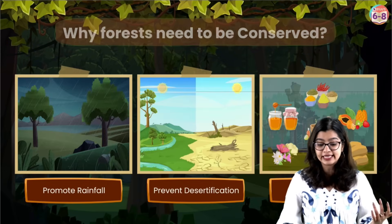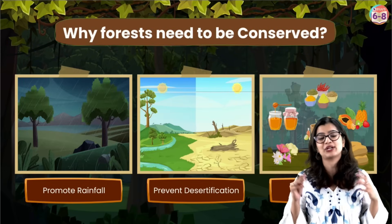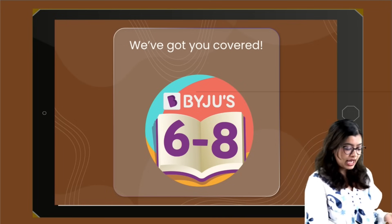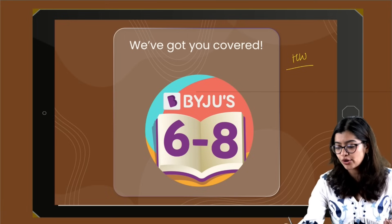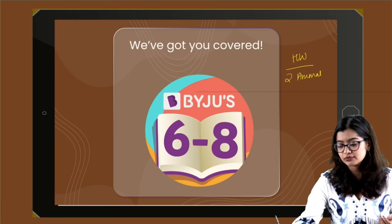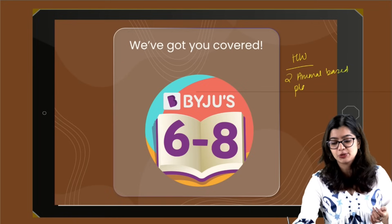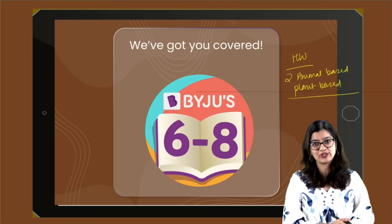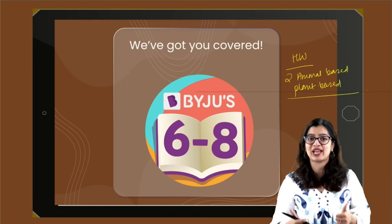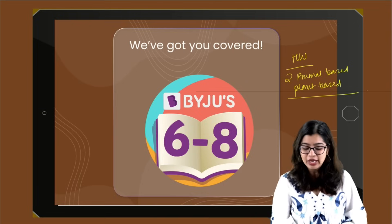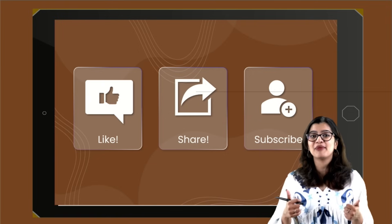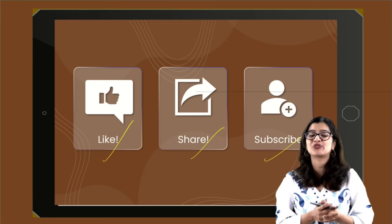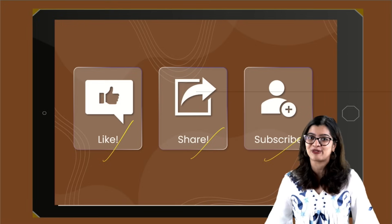Forests need to be conserved for all the reasons we have discussed. I hope this chapter has become easy. Your homework question: name two animal-based and two plant-based products that we get from forests — let me know in the comments. If you found this video helpful, don't forget to like the video and hit the subscribe button, because Baijiu628 has always got you covered. If you enjoyed this session, like the video, share it with your friends, and hit that subscribe button. Take care, lots of love, and bye bye.